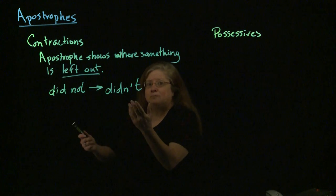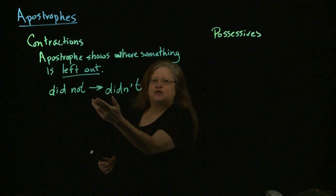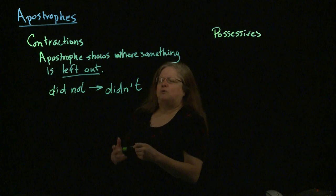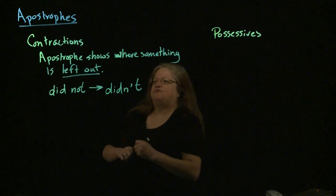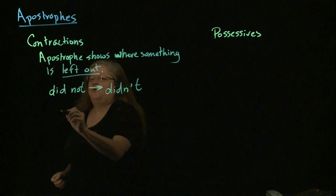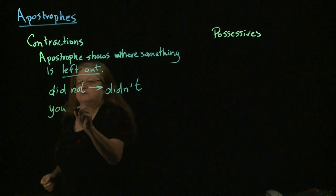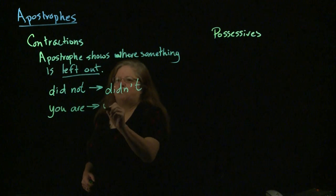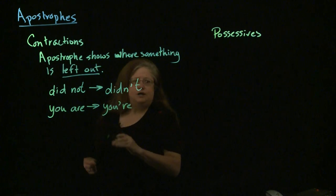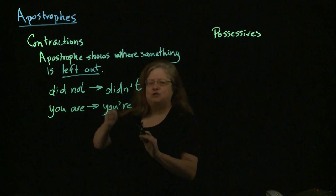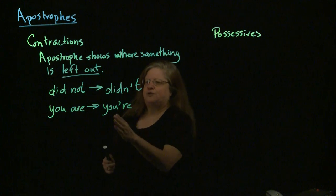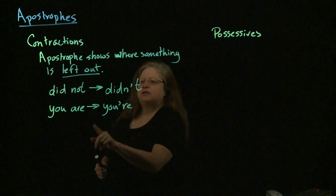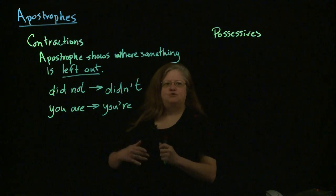Coincidentally, a lot of times the letter that gets left out is also where the words were connected together, but not always. So look for where things were left out. Another example: 'you are' — make the contraction Y-O-U apostrophe R-E. In this case it does happen to be where the words were stuck together, but what that apostrophe is showing is the A has been left out. So that's how you do a contraction.